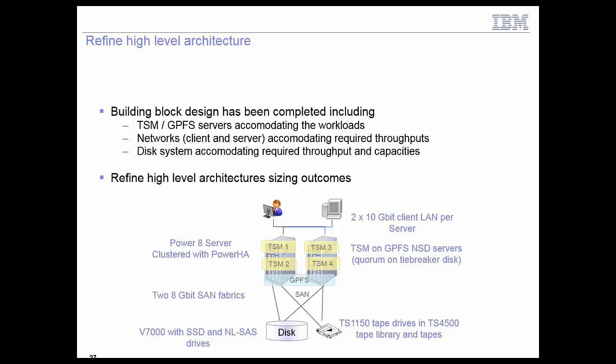At the end of the sizing phase, we have a sized building block with TSM and GPFS servers accommodating the workloads, the networks — which are key — sized to accommodate throughput end-to-end from client to disk, and the system sized to accommodate required throughput and capacities. With this we can refine our high-level solution architecture with specific components: Power8 servers with specified RAM, cores, SAN fabrics, and so on.